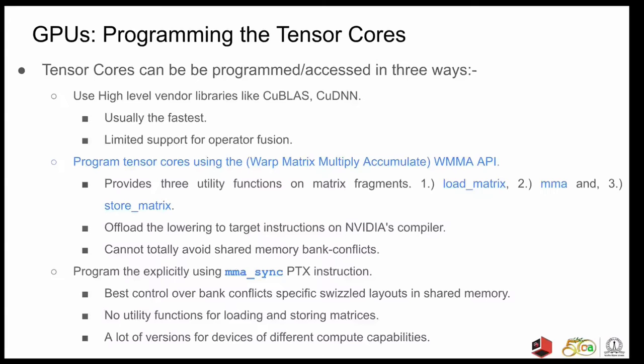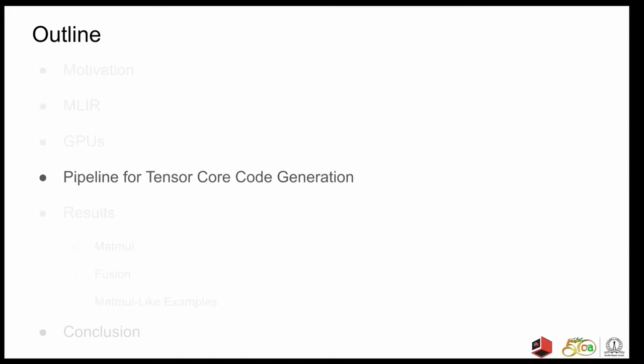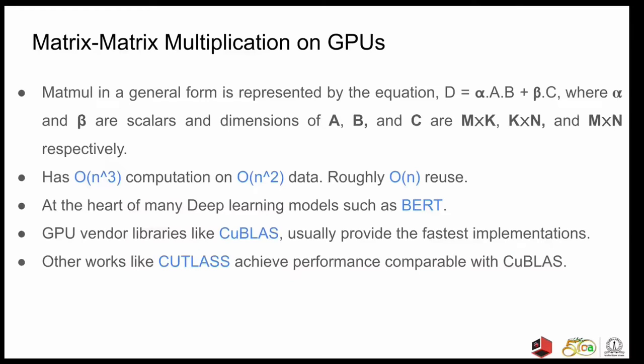So, moving on. I will now present the code generation pipeline that we have put together to generate code for tensor cores. Before that, let's see what MatMul on GPUs is all about. So, MatMul in the general form is represented by the equation D is equal to alpha times A into B plus beta times C. Where alpha and beta are scalars and dimensions of ABC are m cross k, k cross n, and m cross n. MatMul has order of n cube computation on order of n square data. So, roughly there is order of n reuse. It's at the heart of many deep learning models such as BERT as mentioned previously. And GPU vendor libraries like cuBLAS usually have the fastest implementations.